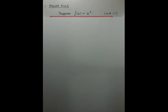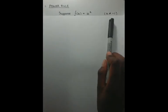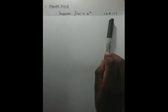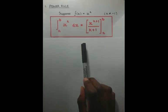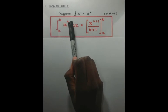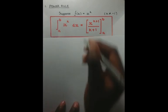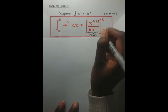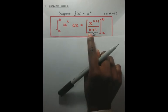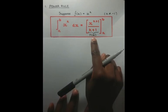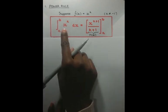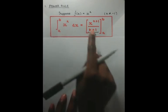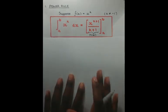The first special integral is the power rule. If you have a function that looks like x to the power of any number k, where k is not equal to minus one, then the anti-derivative F(x) is x to the power of k plus 1, divided by k plus 1. Integration is like the opposite of differentiation — if you differentiate this anti-derivative you actually go back to the original function. That's why it's called the anti-derivative.